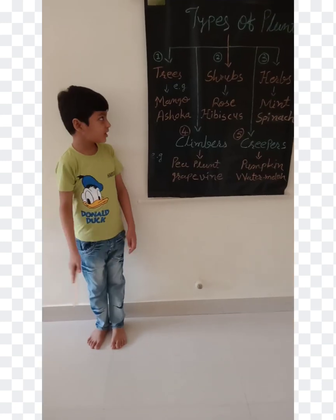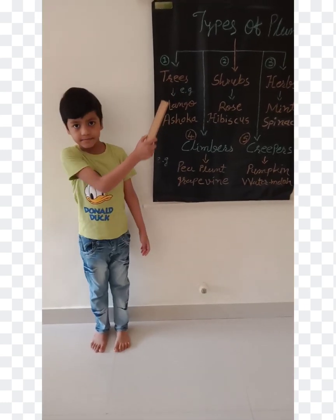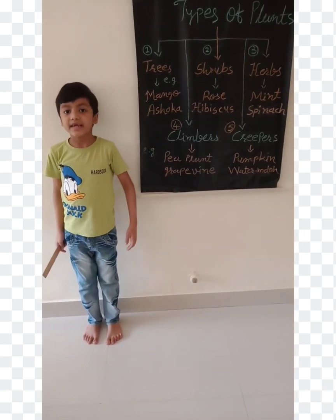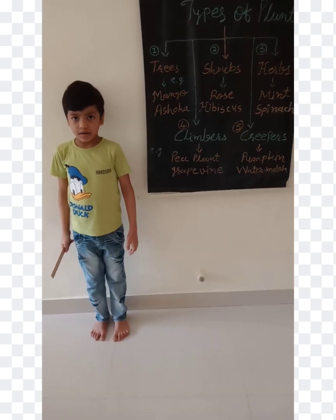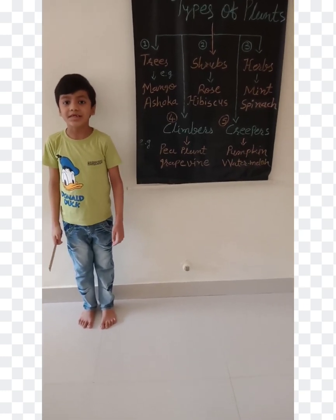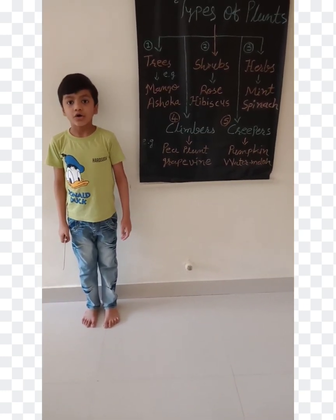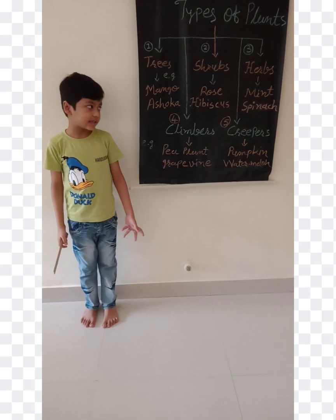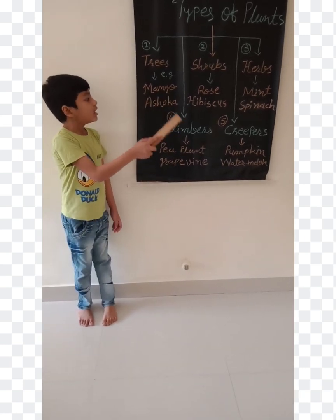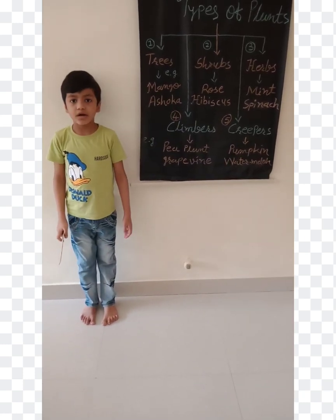The first type is tree. Trees are very big and strong. They have a thick woody stem which is called a trunk. For example: mango tree, ashoka tree, coconut tree, and banyan tree.